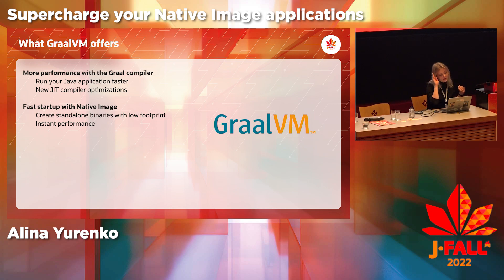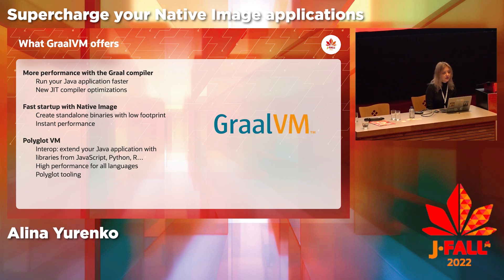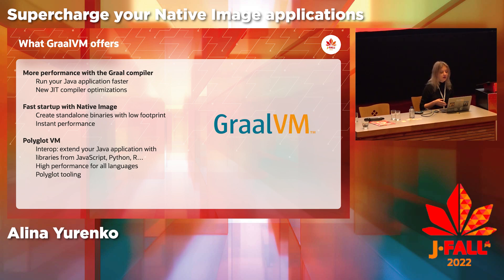So that is the JIT part. And obviously the native image part — that is where we take your Java application and compile it ahead of time into a platform-specific native executable. You can deploy that executable on a machine that doesn't have a JVM on it, and it is fully functional on its own. And last but not least, GraalVM is also a polyglot VM. In addition to Java and traditional JVM languages, you can execute any number of languages — JavaScript, Python, Ruby, et cetera — and you can even write polyglot applications leveraging multiple languages in one app. GraalVM gives you interop features, tooling, and optimizations for the whole thing, so you can run with high performance no matter how many languages you are using.